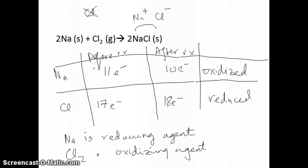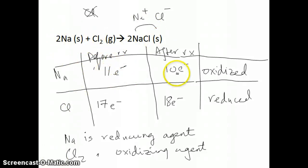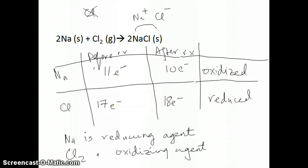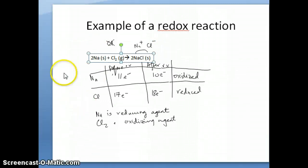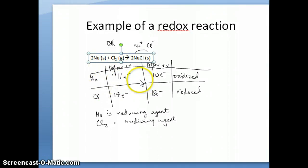That's how you figure out whether a particular reaction is a redox reaction — you count the electrons before and after the reaction. If there's a change in the number of electrons, then you know it's a redox reaction. This sodium chloride example from sodium and chlorine is fairly straightforward for determining which species is oxidized and which is reduced.